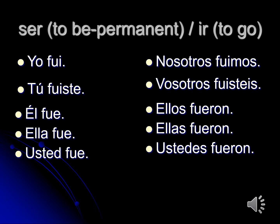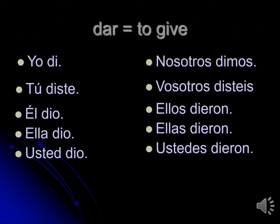Did you notice something different? Irregular verbs in the preterite in Spanish do not have accent marks on them. Dar is an AR verb but it's conjugated in the preterite almost as if it were an ER or IR verb: yo di — I gave, tú diste — you gave, él dio, ella dio, usted dio — he/she/you gave, nosotros dimos — we gave, vosotros disteis — y'all gave (Spain), ellos dieron or ellas dieron — they gave, ustedes dieron — y'all gave.